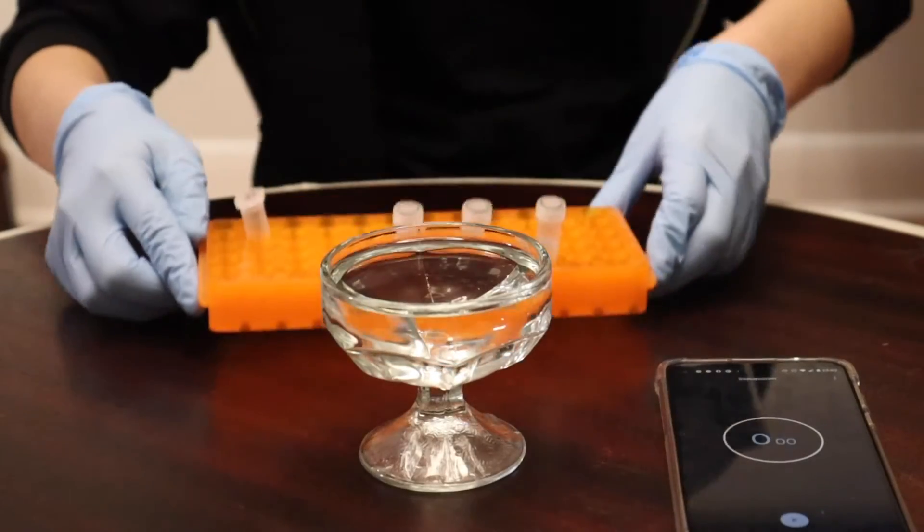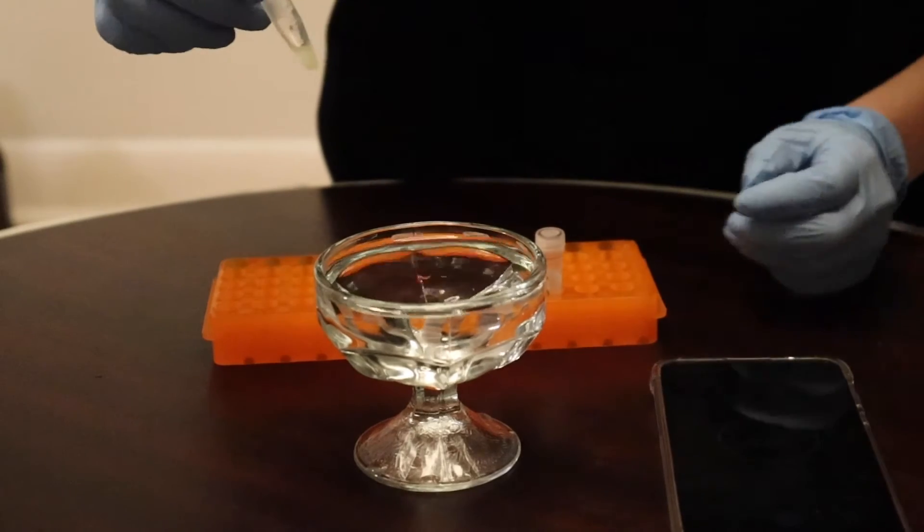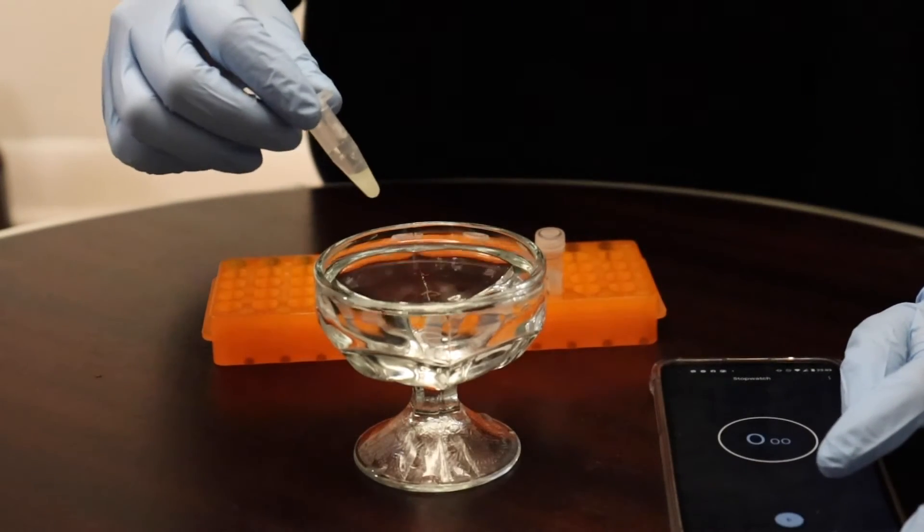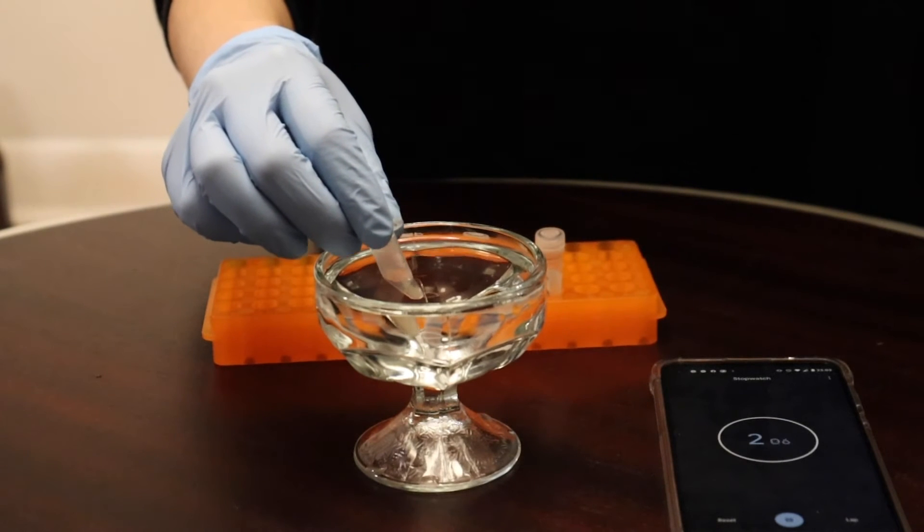Now we're going to perform a heat shock where we take the mixture directly from the fridge and put it into 42-degree water for 30 seconds. This is unusually hot for the bacteria, so it forms pores in its cell walls, allowing the Cas9 system to enter.